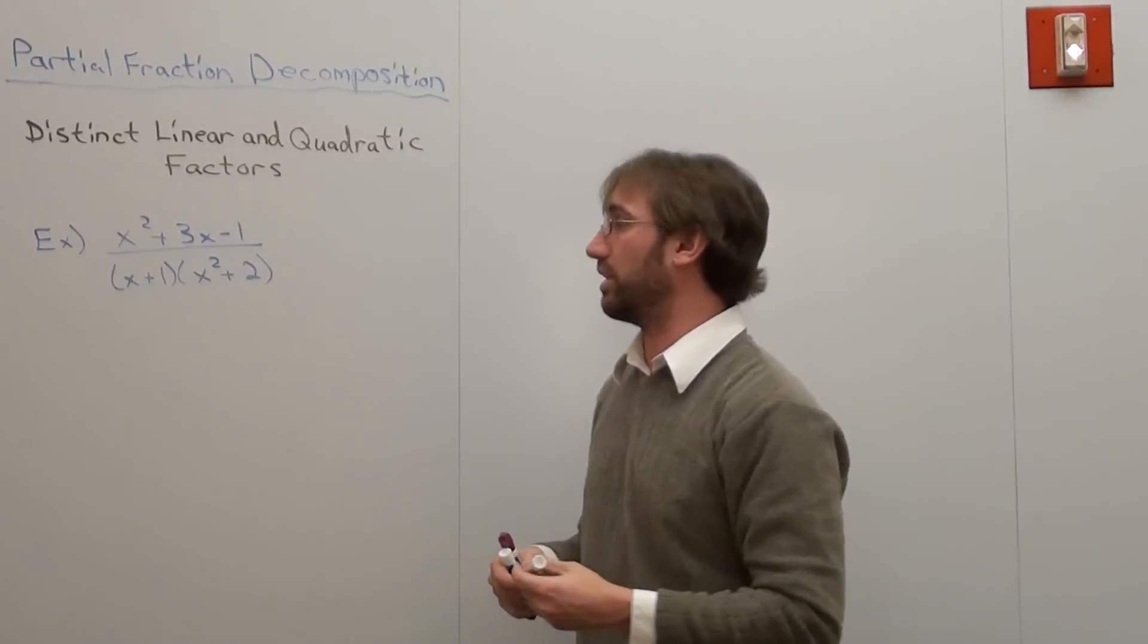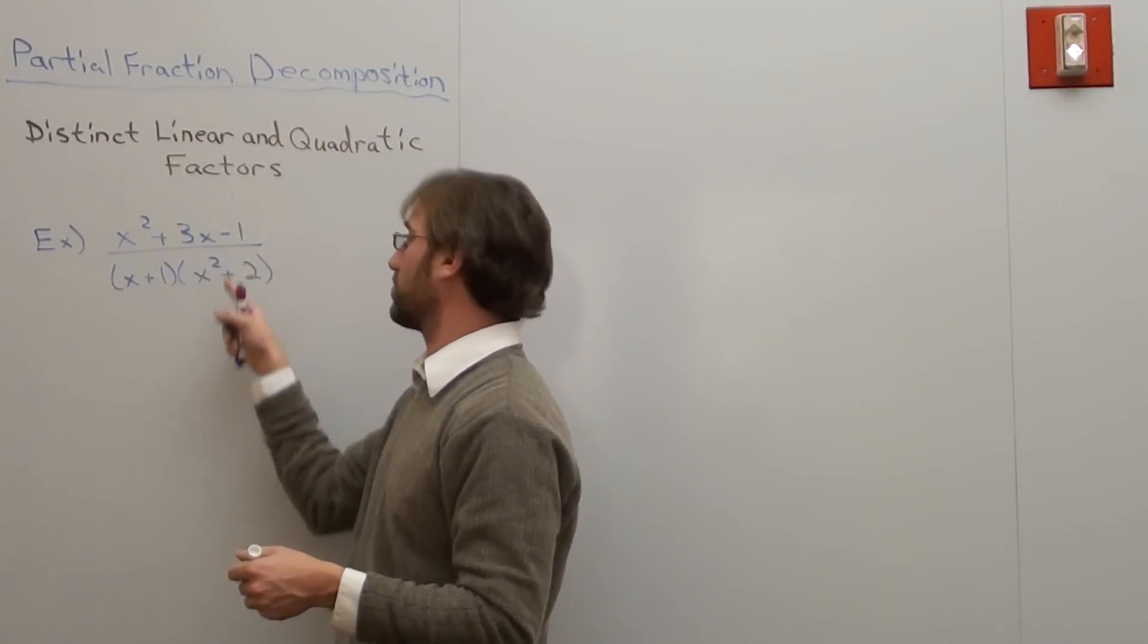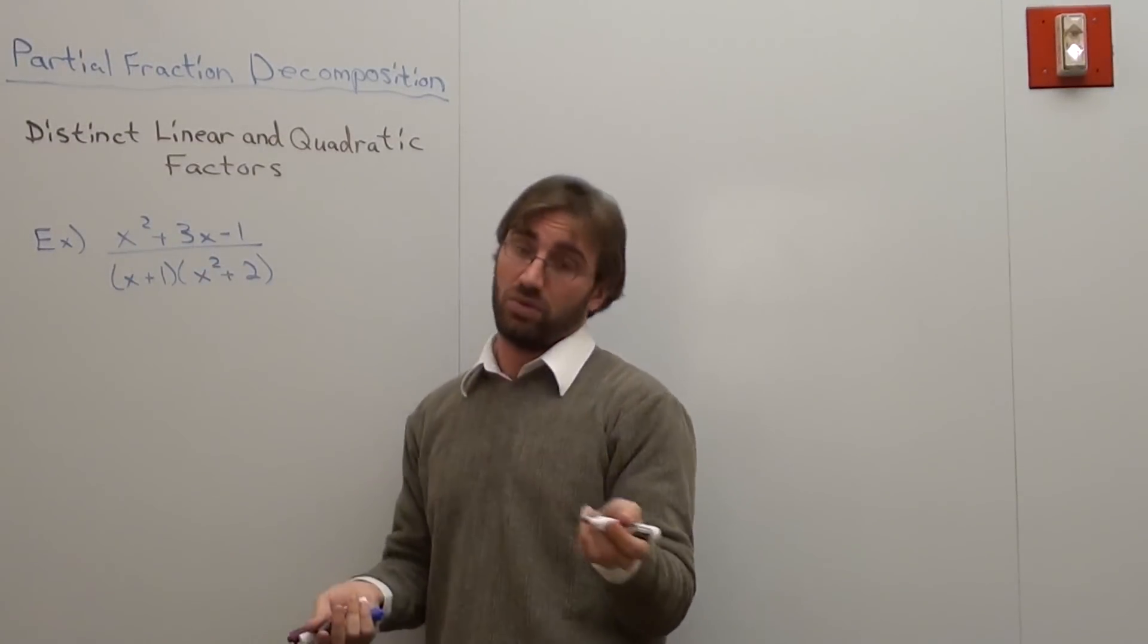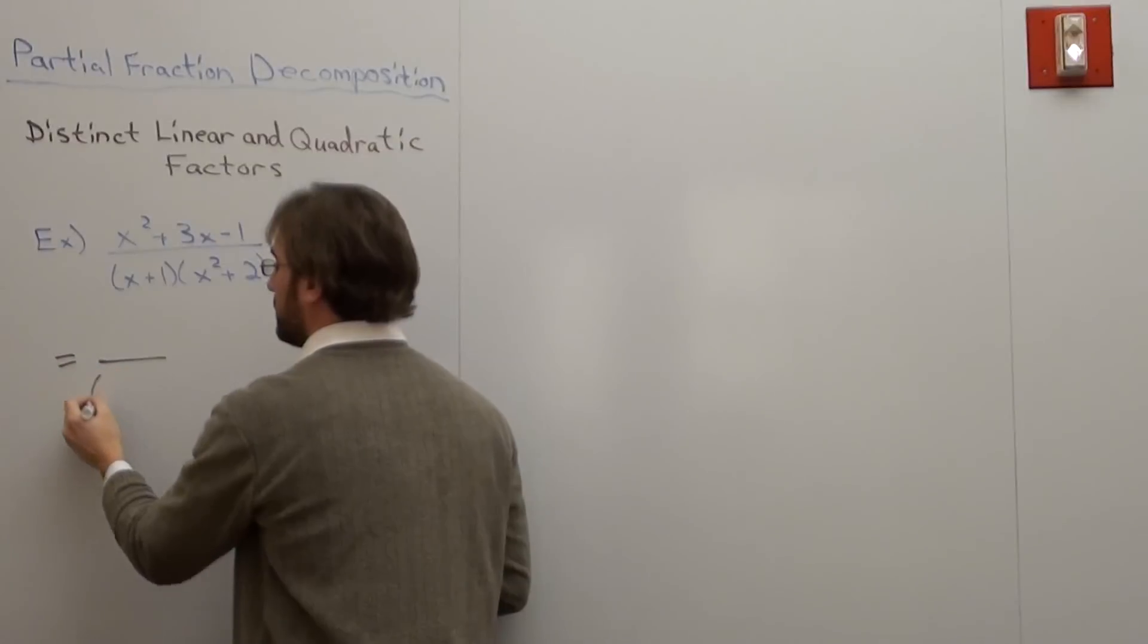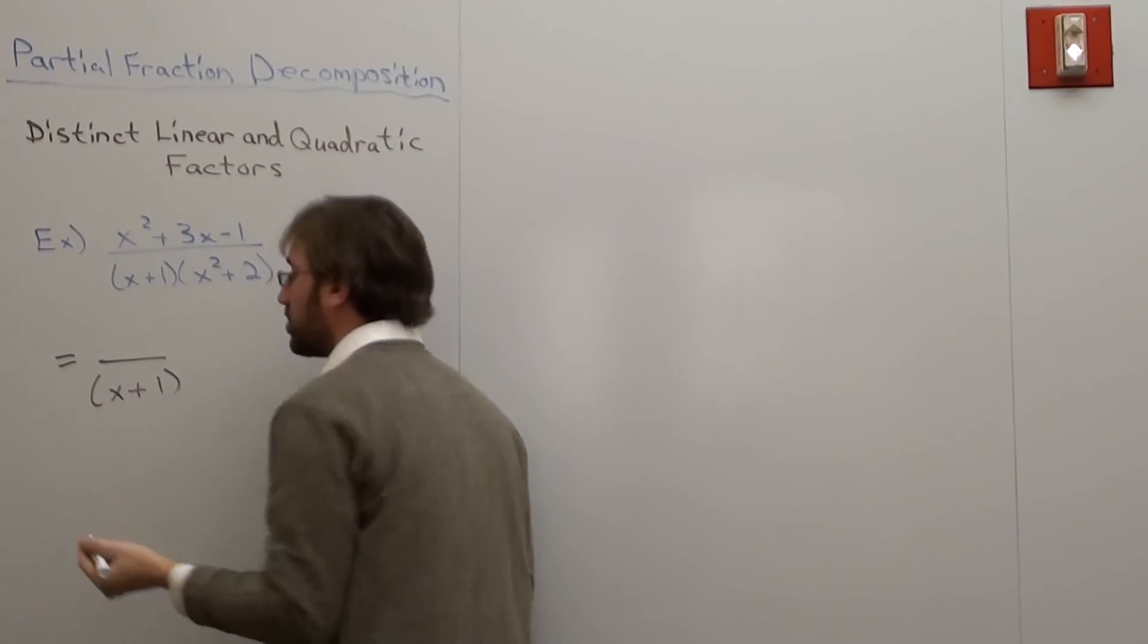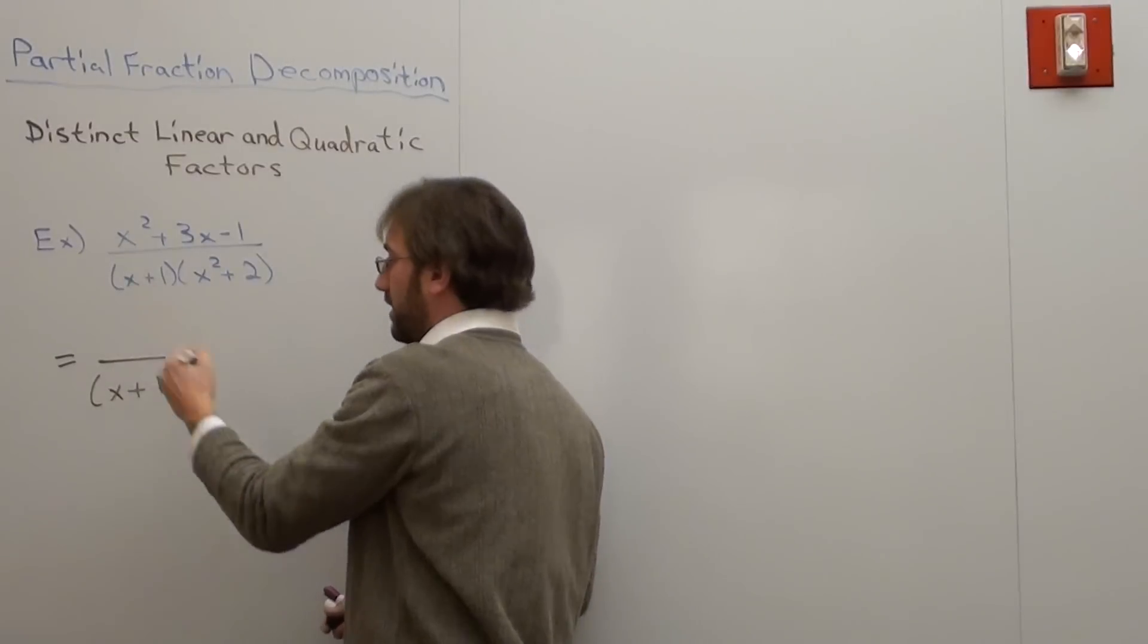Here's how you rewrite it. You've got to be careful here because a lot of students make this mistake. I've got x squared plus 3x minus 1 over all of this. I'm going to rewrite it. It rewrites itself as x plus 1. That's the denominator. That's a distinct linear factor.